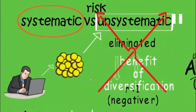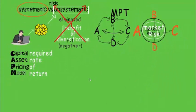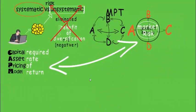CAPM gives us the required rate of return which a person earns by taking into consideration the market risk. This market risk is the systematic risk, which depends on macro factors — economic, social, political — that are uncontrollable. The CAPM model tells us that the return from your investment accounts for this systematic, uncontrollable risk.